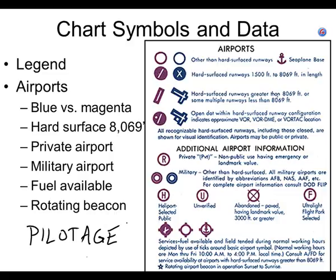You'll notice this thing on the screen over on the right — this is the legend. It's on everybody's sectional. If you folded it up, it tells you what all the symbols mean. When you go take the FAA written test, they give you the legend, so if they ask you about an airport symbol you can look it up. Of course, you're going to be so proficient by the time you get there you won't need to look it up.